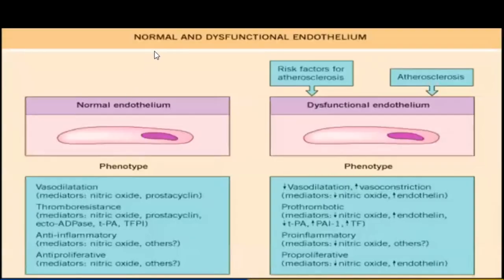Normal versus dysfunctional endothelium: damage to endothelium is a risk factor for atherosclerosis. Dysfunctional endothelium phenotype shows: changed vasodilatation to vasoconstriction, pro-thrombotic, pro-inflammatory, and pro-proliferative states. In the normal state, there is vasodilatation, thrombo-resistance, anti-inflammatory, and anti-proliferative activity.